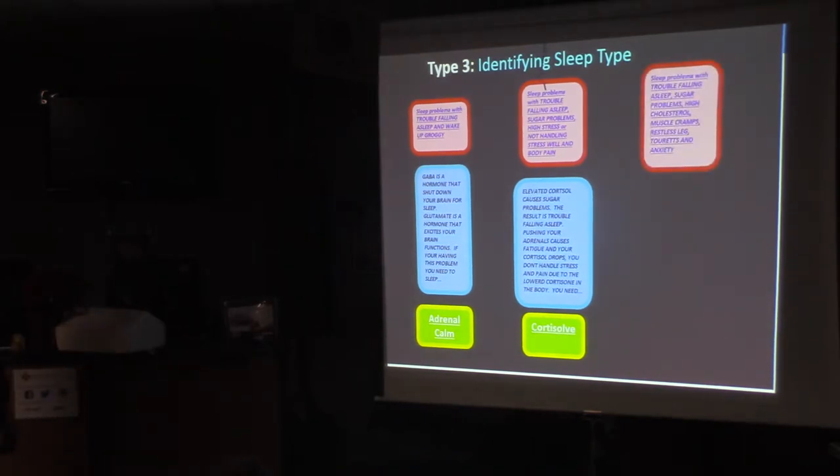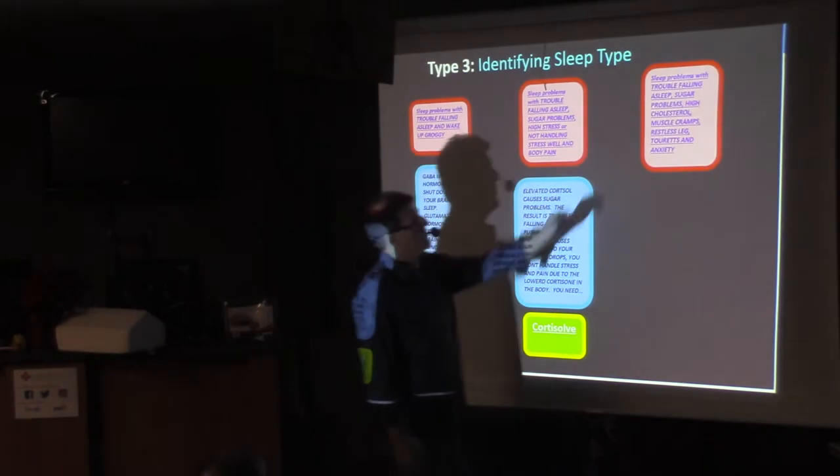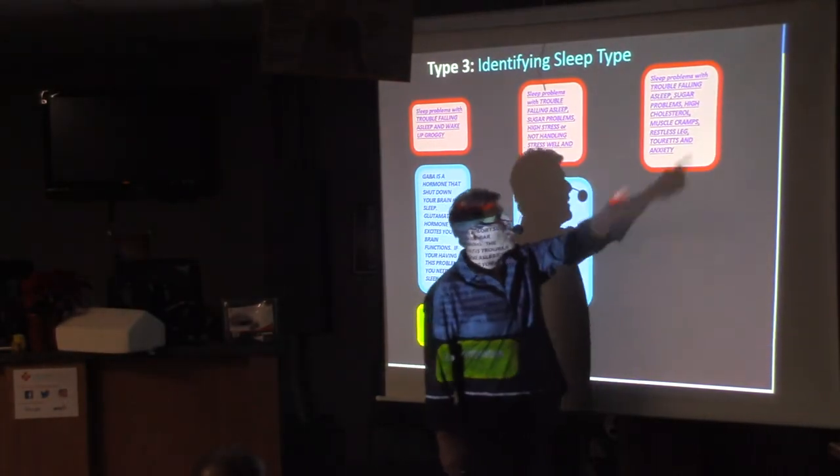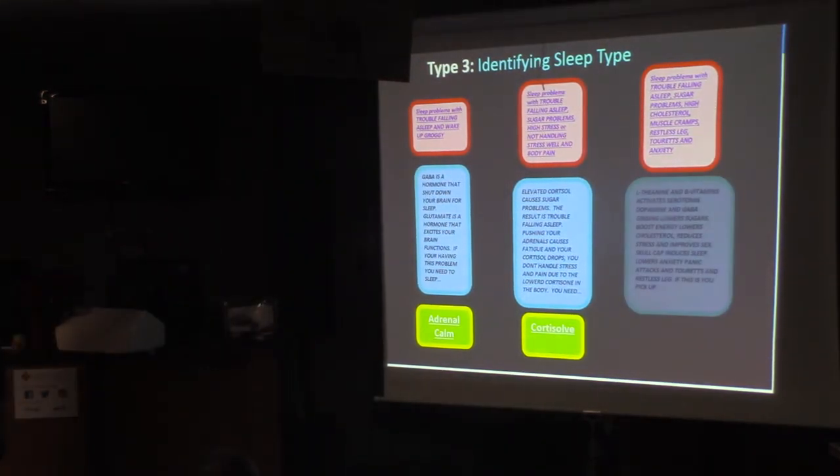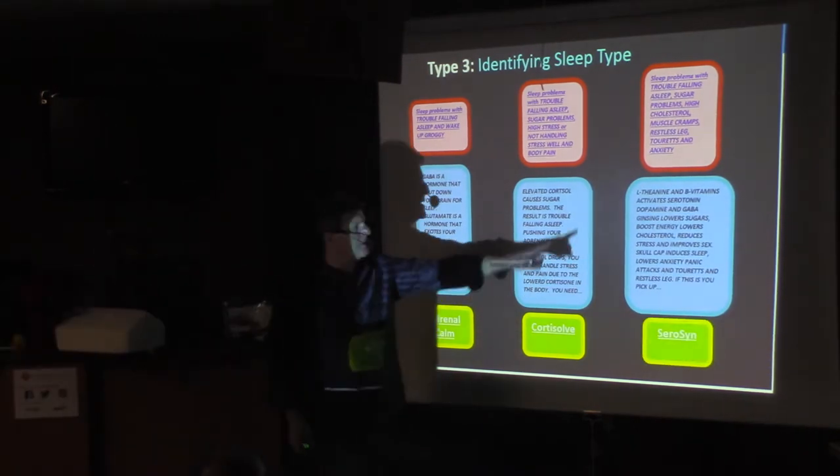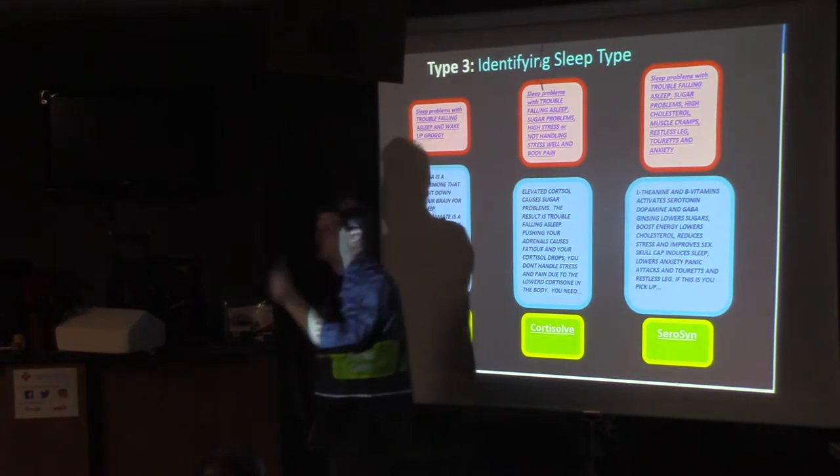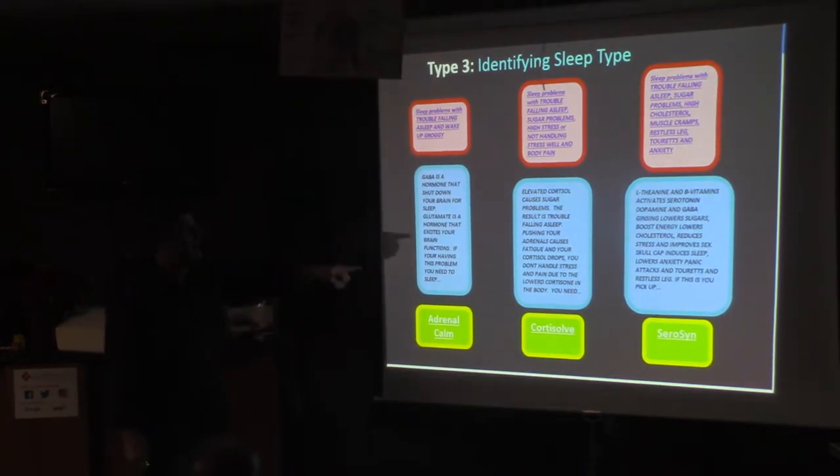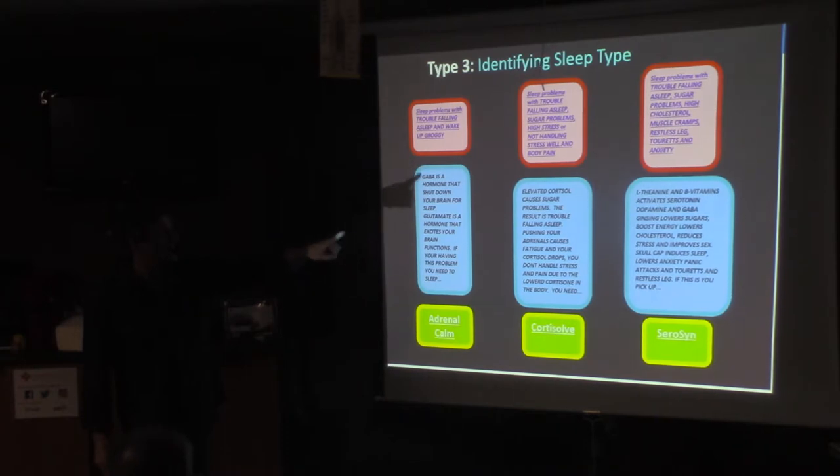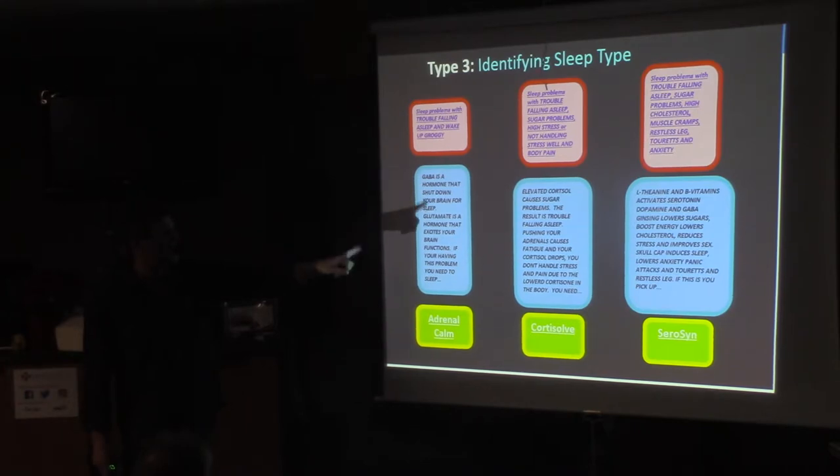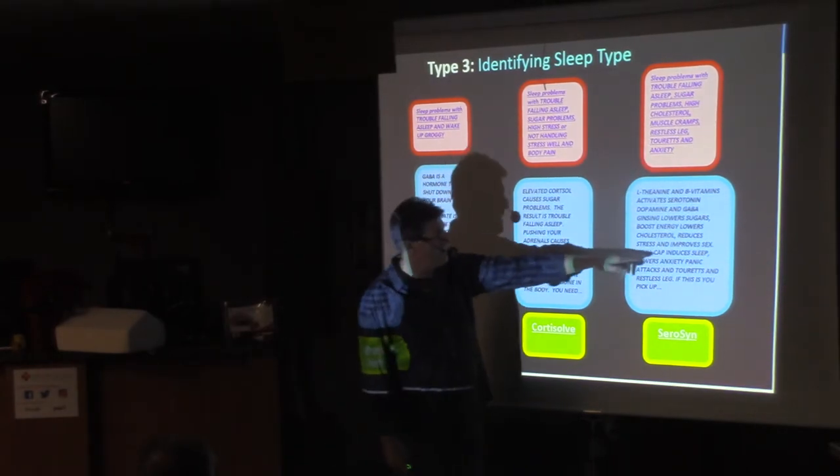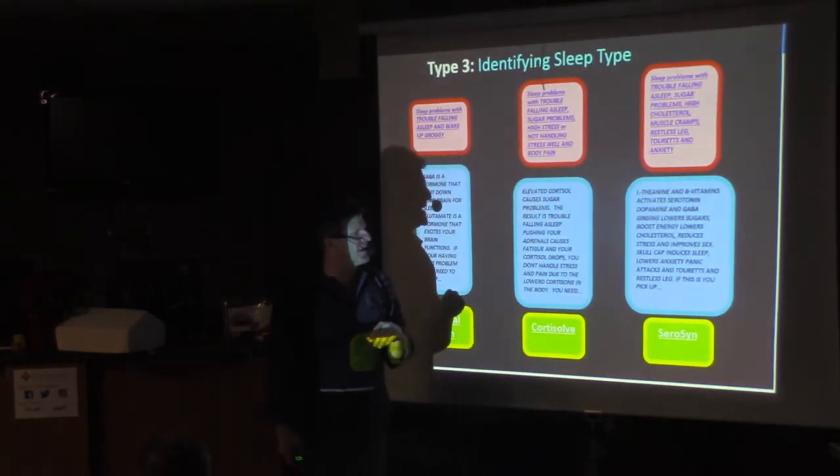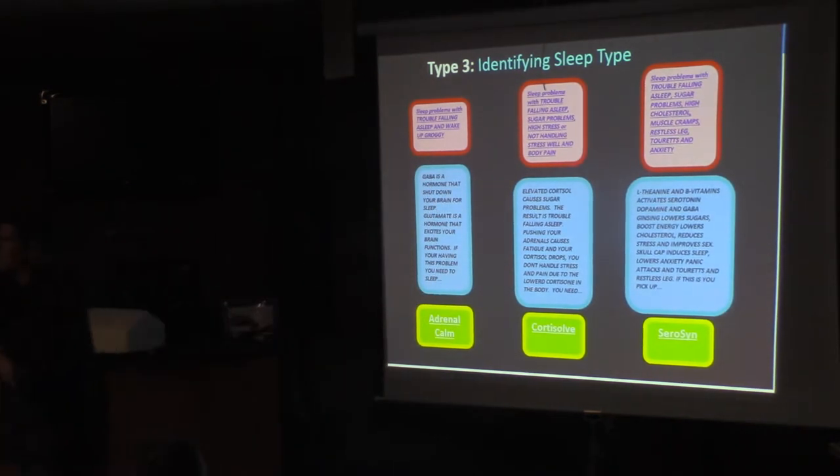Dr. Ray, I have trouble falling asleep, sugar problems, I have known high cholesterol, muscle cramps, restless leg, Tourette's syndrome, and anxiety. What do you need? You're going to need seracin. L-theanine and B vitamins activate serotonin to become dopamine. Dopamine and GABA. Ginseng lowers sugars, boosts energy, lowers cholesterol, reduces stress, improves sex. Skull cap. Skull cap is a herb. Herb induces sleep, lowers anxiety, panic attacks, Tourette's, and restless leg. If that's you, pick up seracin. That'll help.